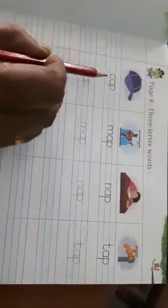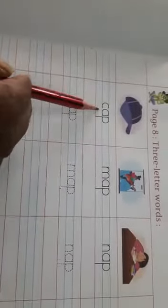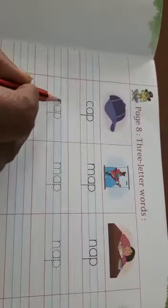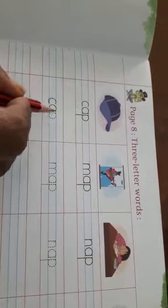And come to page number 19. Page number 19, cap. So cap, it is given in dots for you all, you have to trace this on the dots. Cap, cap, come down, two times you have to write.